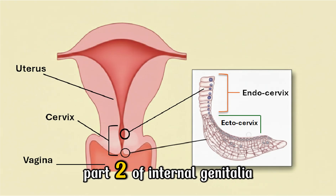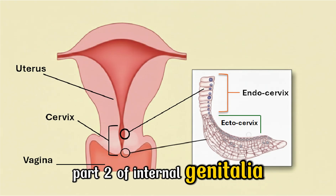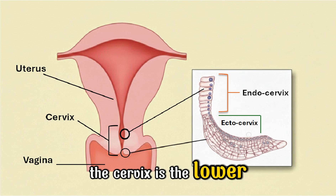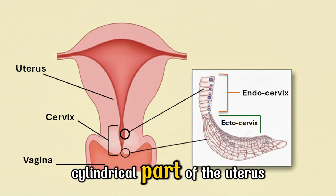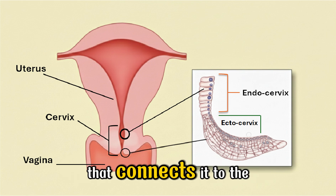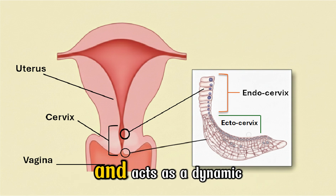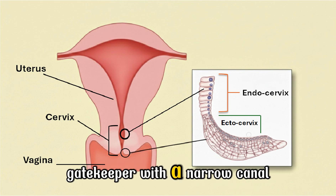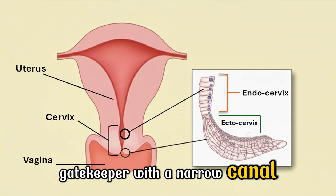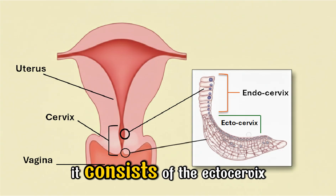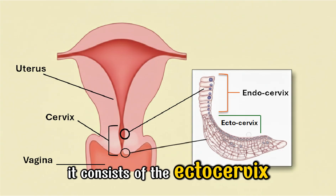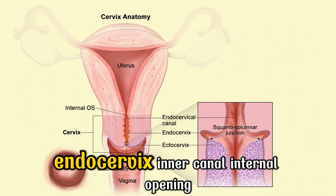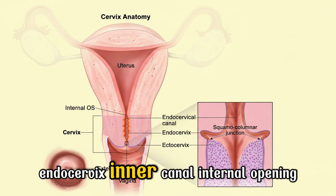Part 2 of internal genitalia: the cervix. The cervix is the lower, cylindrical part of the uterus that connects it to the vagina and acts as a dynamic gatekeeper with a narrow canal. It consists of the ectocervix (outer part), endocervix (inner canal).